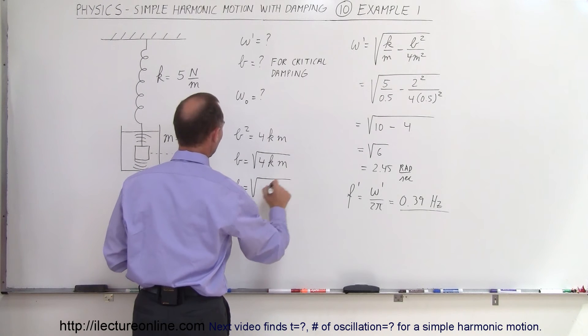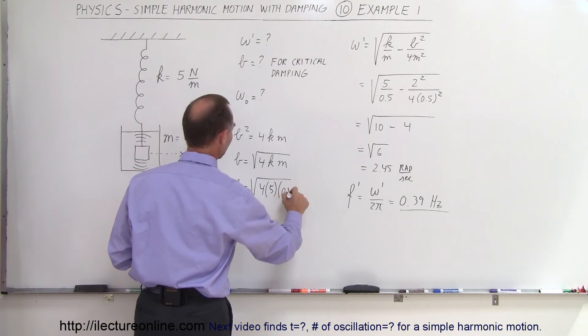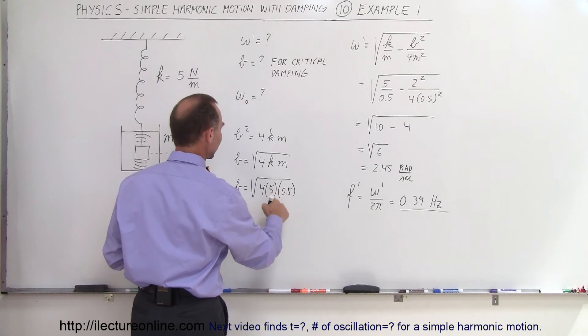So b is equal to the square root of 4, times k, which is 5, times m, which is 0.5, that would be 2 times 5, which is 10.